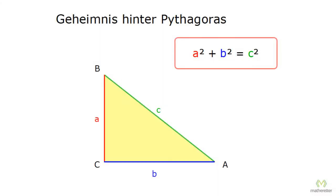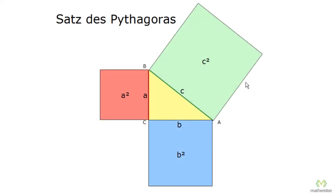Hello and welcome to the next video, where we would like to explain the secret behind the Pythagorean theorem. We just got to know the Pythagorean theorem as a squared plus b squared equals c squared, and in many books it can be found graphically as follows.